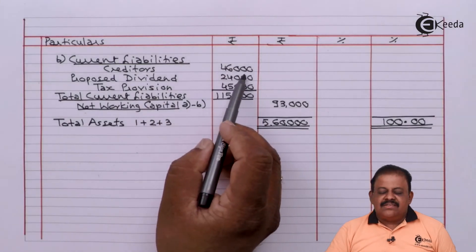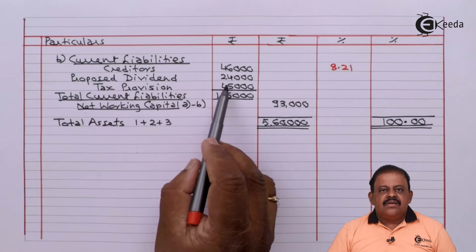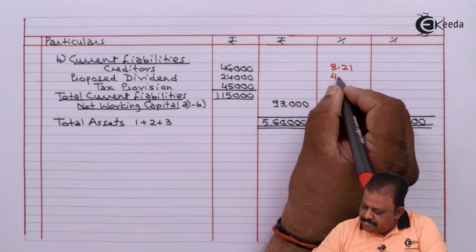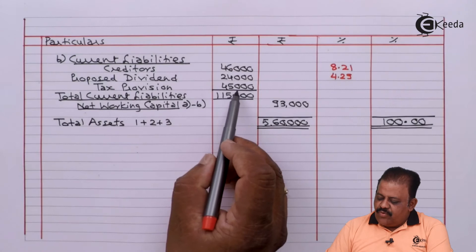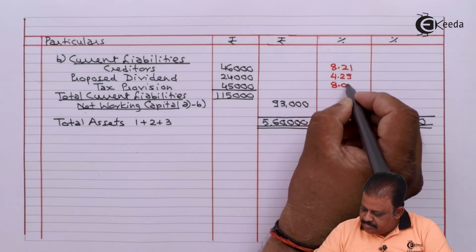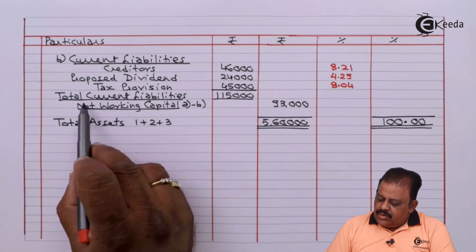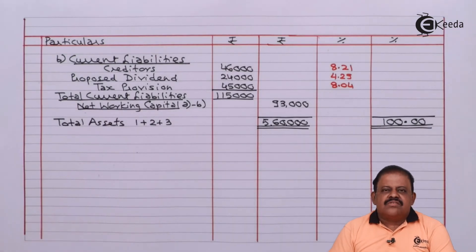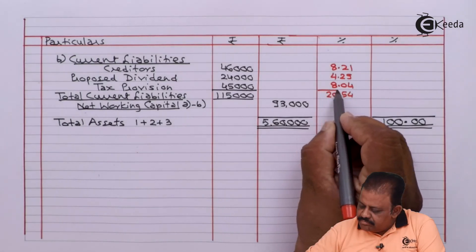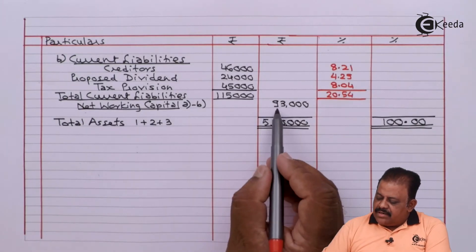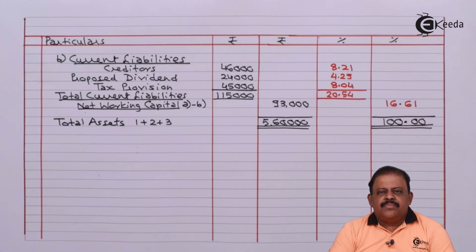Creditors: 46,000. Proposed dividend: 24,000, which gives 4.29 percent. Tax provision: 45,000, which gives 8.04 percent. Total current liabilities: 1,15,000, which gives 20.54 percent. Net working capital: 93,000, which gives 16.61 percent.